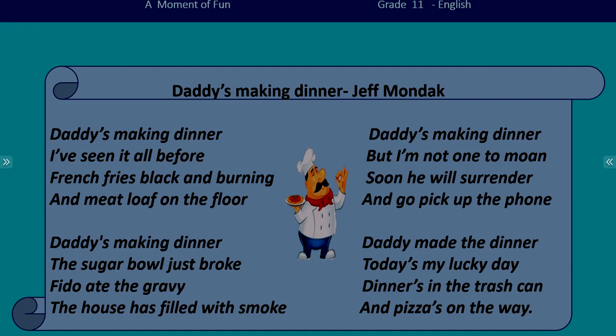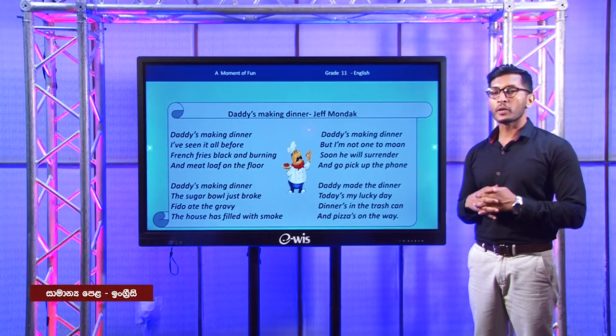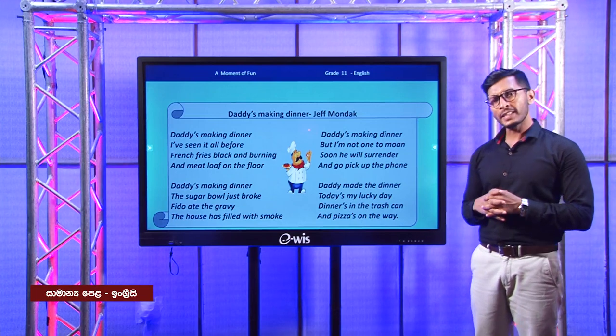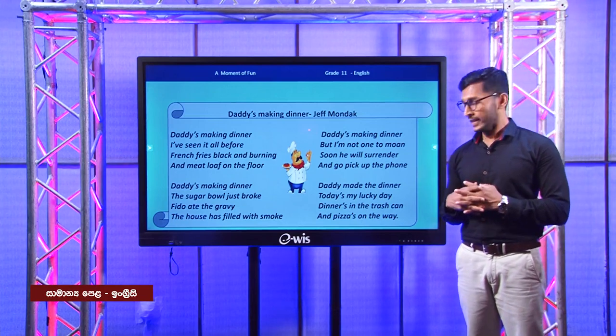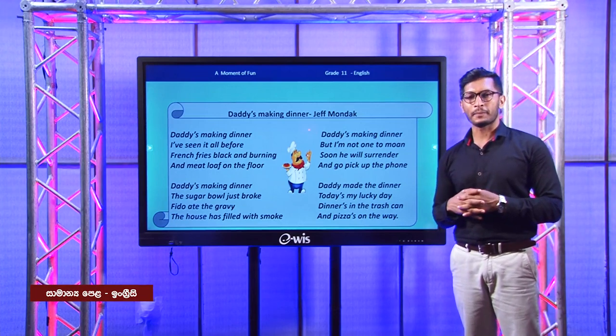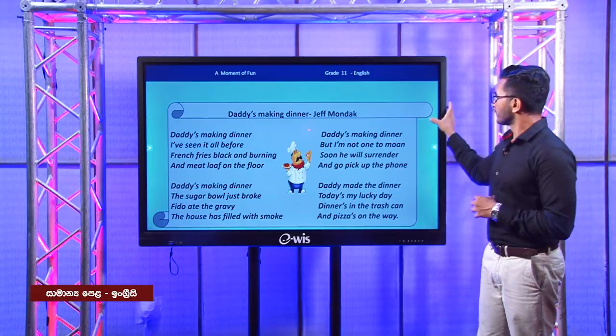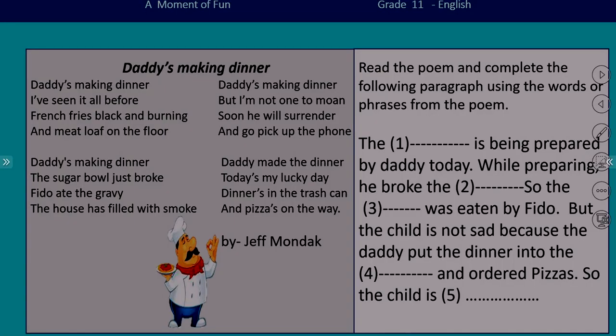What do you mean by 'mourn' here? Mourn means complain or grumble. And 'surrender'? Here surrender means give up. Now you have an activity. In this activity, you are going to obtain the necessary word or phrase from the poem and complete this paragraph. Shall we do the first one together?